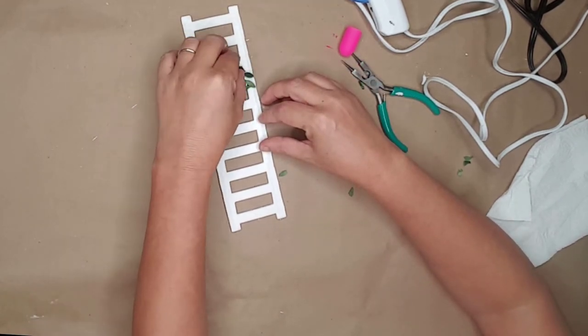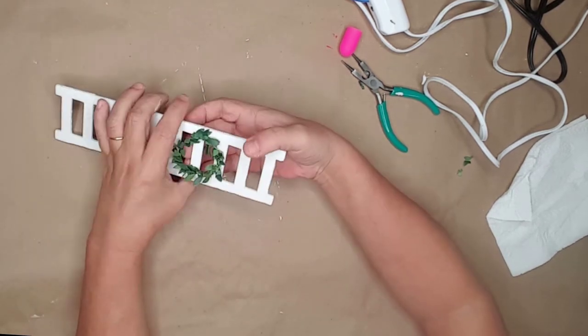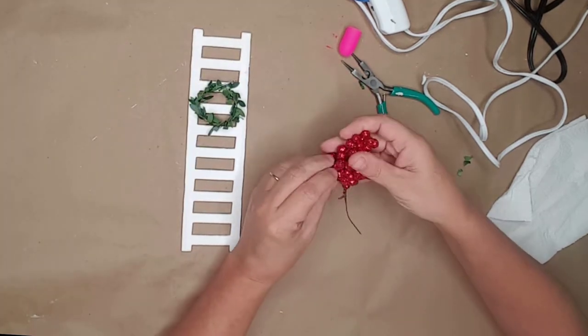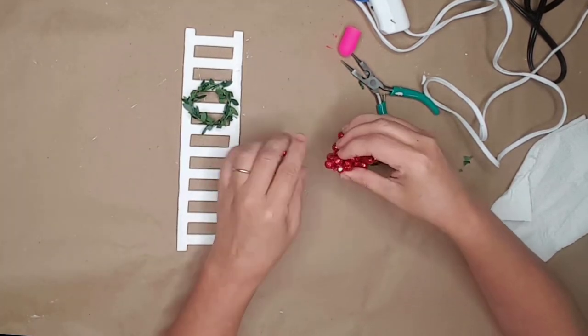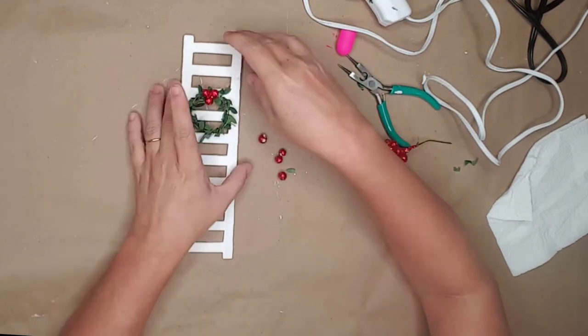I placed the wreath on the ladder and attached it with my glue gun. I then added three little red berries from this floral I got from Dollar Tree to the wreath.